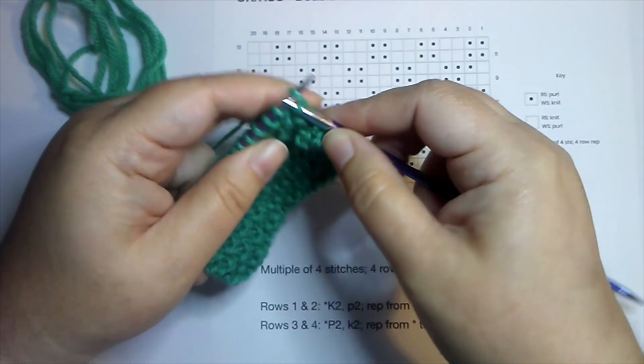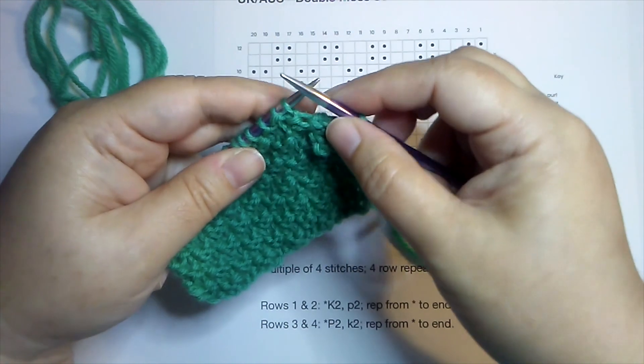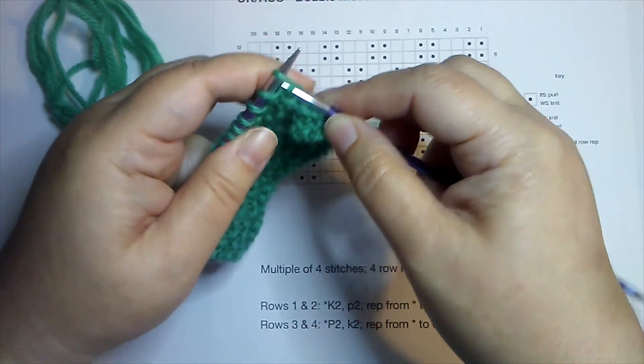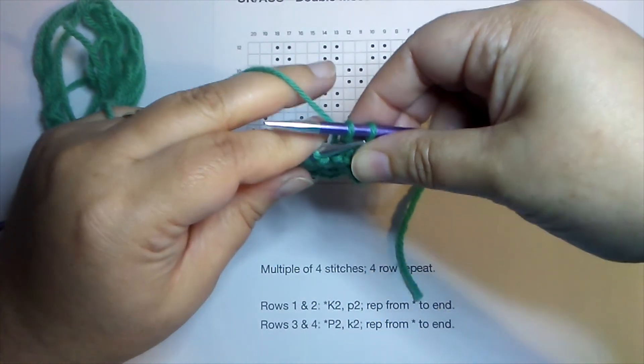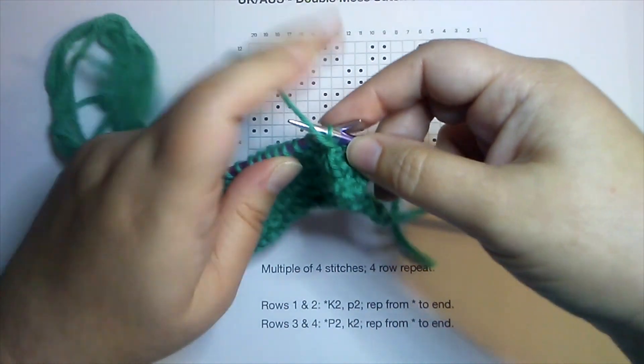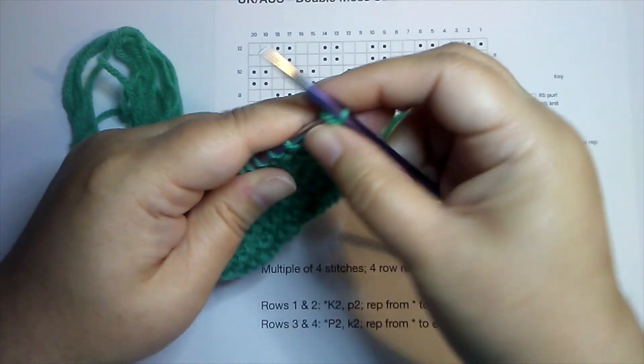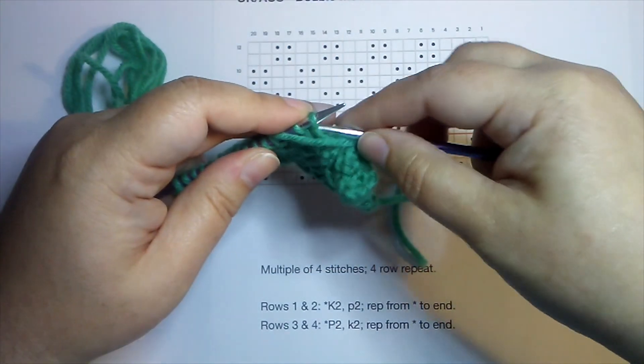Then I have a knit. It's easy to bind off on the wrong side row in this pattern because I'm just working the stitches as they present. I don't even have to pay attention to my pattern. So I knit or purl as needed and bind off across the row. That's all there is to binding off in pattern.